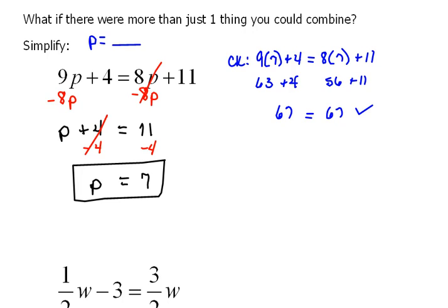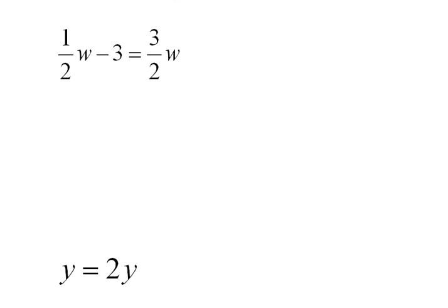Let's try another one. This one involves fractions. So here we have 1 half w minus 3 equals 3 half w. Now again, we've got w's in different places, so we need to move one of these terms over to the other side.